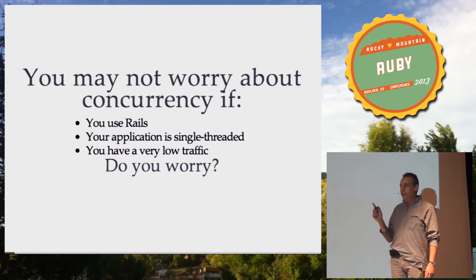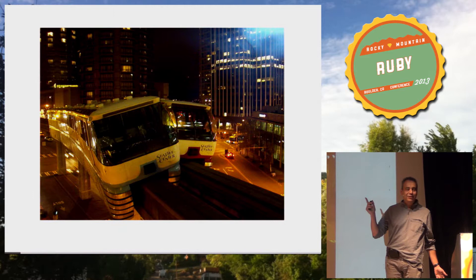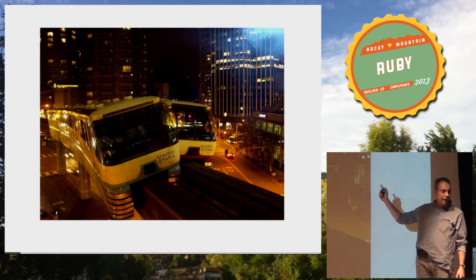For those who didn't raise hands on that last question, that's what can happen. For those who don't recognize, this is the Seattle Monorail. You can see it as the single-threaded Rails application, and it's pretty low-traffic because Seattle was fine with these two processes for a long, long time.